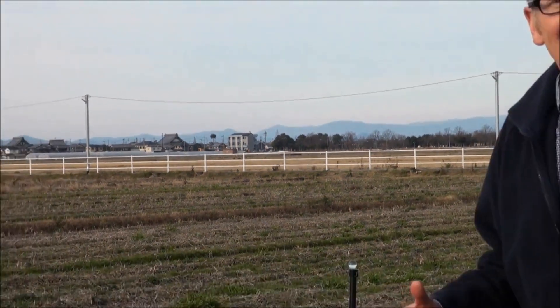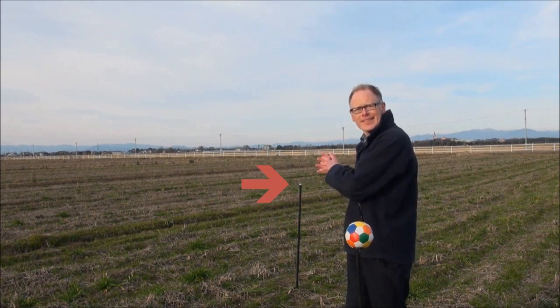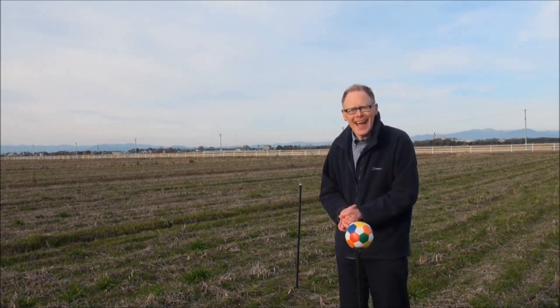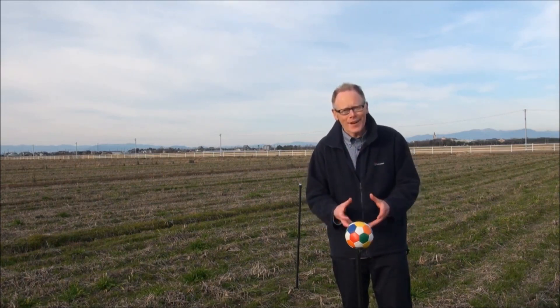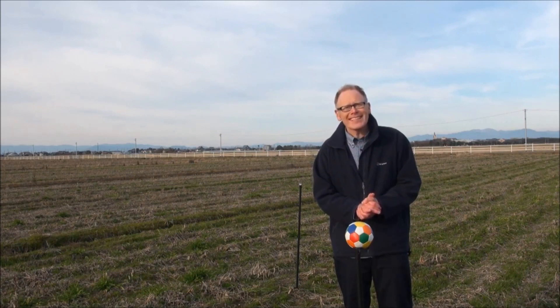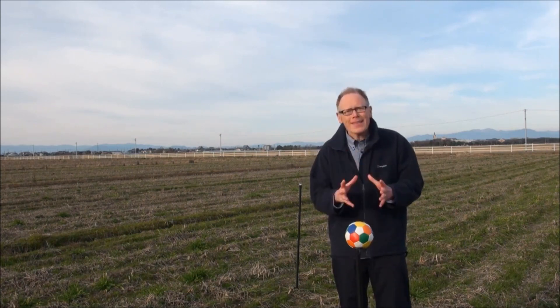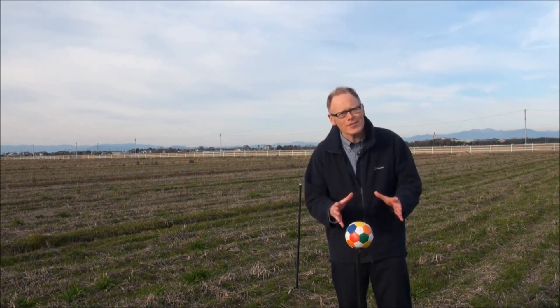And so this is a true scale model of the Earth, Moon, Sun system. And this can really help us to appreciate the enormity of space. It can also help us to appreciate an amazing mathematical coincidence that makes solar eclipses so special.